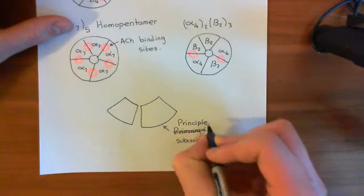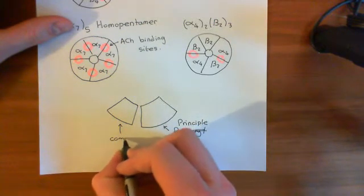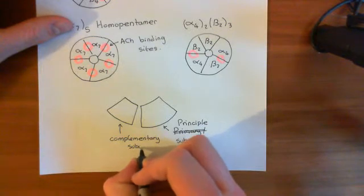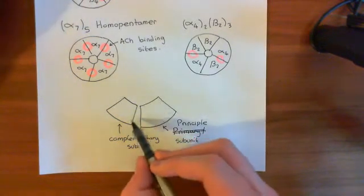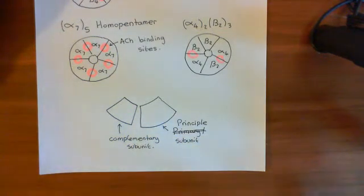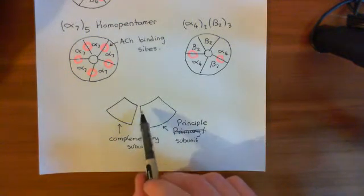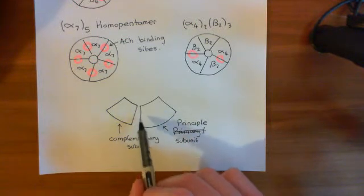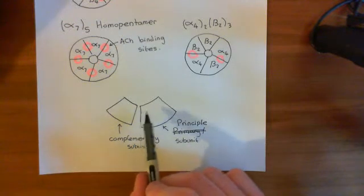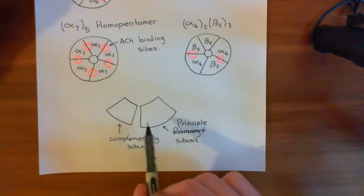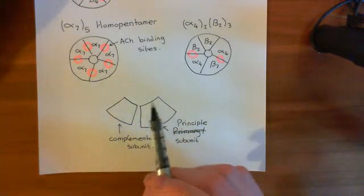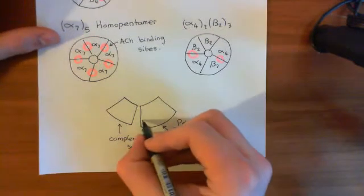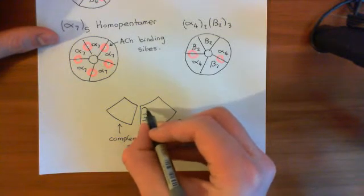So one will be known as the principal subunit and the other will be known as the complementary subunit. The principal subunit and the complementary subunit provide different motifs into this cavity between the two, which is going to be the acetylcholine binding site. The principal subunit provides certain conserved protein motifs — specifically what are known as the A motif, the B motif, and the C motif, also known as loops — the A, B, and C loops, which line this cavity.